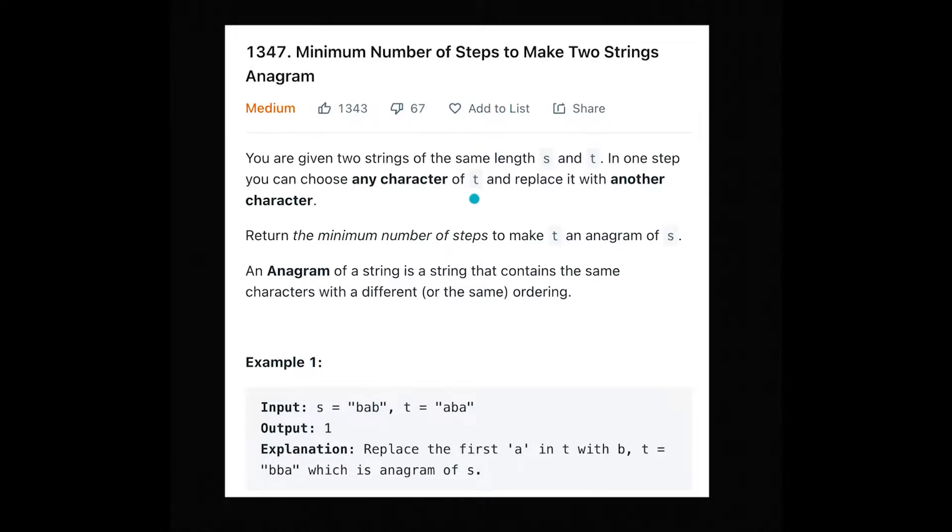Return the minimum number of steps to make t an anagram of s. Let's see the example. You are given s and t, where s is a b a b.